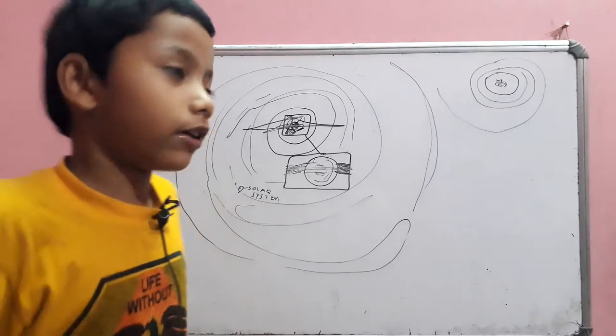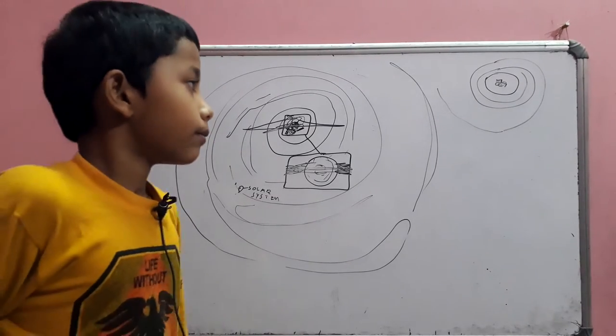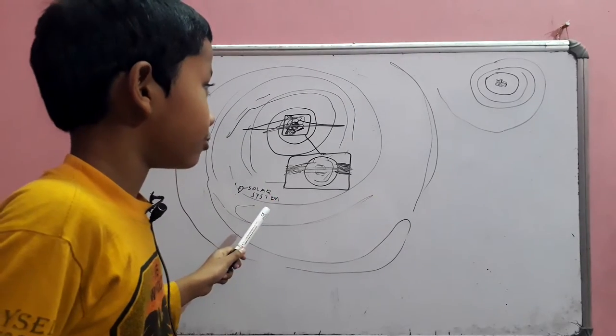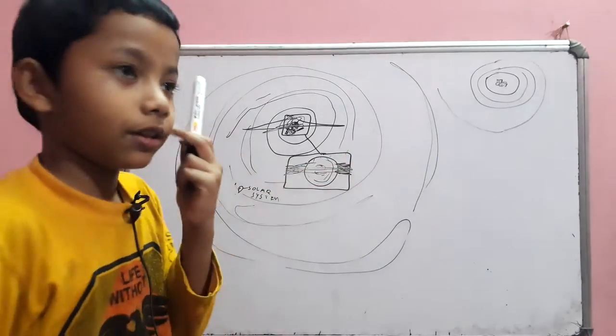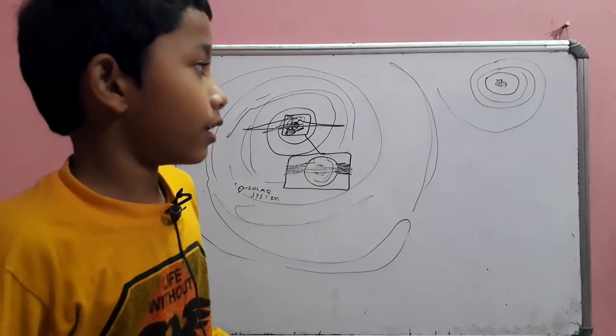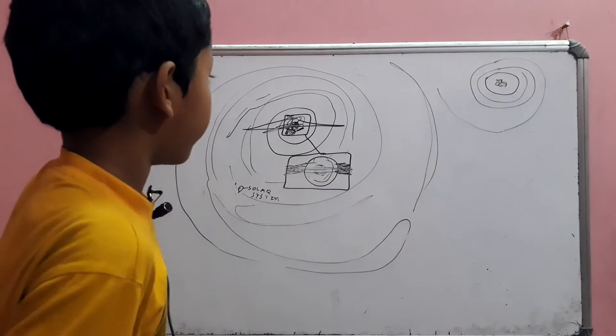Yeah, it is so tiny, we cannot see it. But we can see the Milky Way and Andromeda galaxy. What if the solar system moves to Andromeda galaxy? There is going to be life on it. And also the Milky Way.